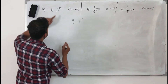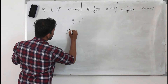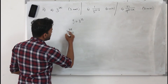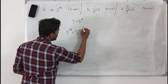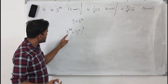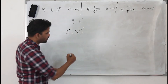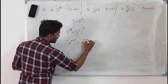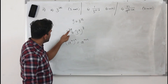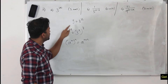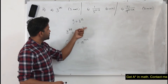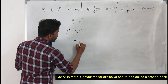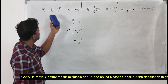For the first question, look at it. You are given 3 to the power 3x. You can write it as 3 to the power x, whole cube. Using laws of indices, if you have 8 to the power m to the power n, you can write it as 8 to the power m times n, or vice versa. So 3 to the power x is y, and you can write it as y cubed. That's the answer for part a.